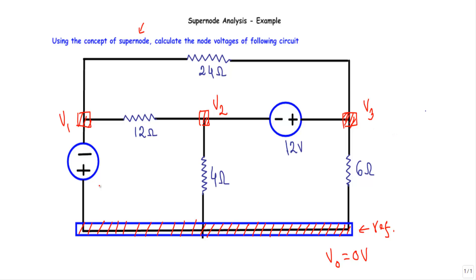Between node number one and the reference node, we have this five volt independent voltage source. And between node number two and node number three, we have this 12 volt independent voltage source. Since the five volt source is between a non-reference node and the reference node, it will not form a super node. Rather, node number two and node number three will form the super node.